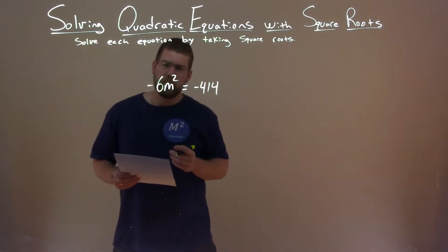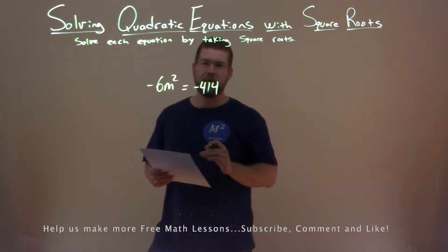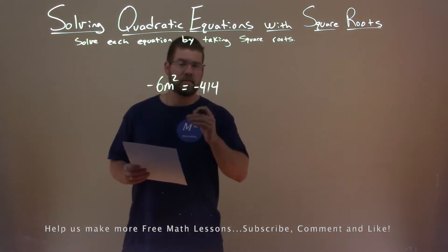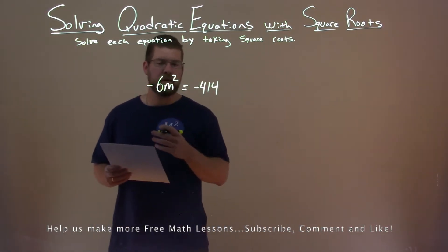We're given our problem here. Negative 6m squared equals negative 414, and we want to solve this by taking the square root. Well, first thing I need to do is get m squared by itself.